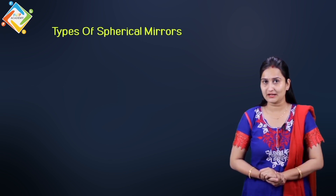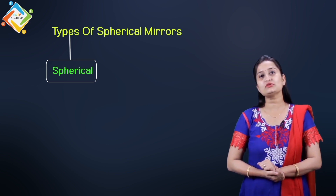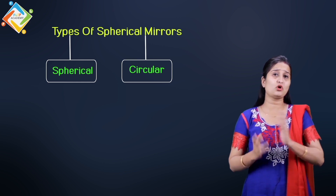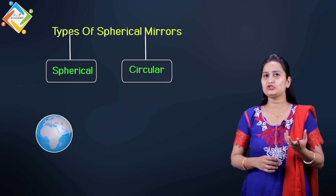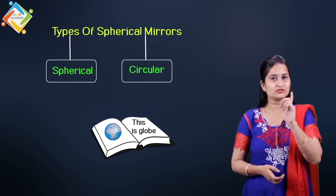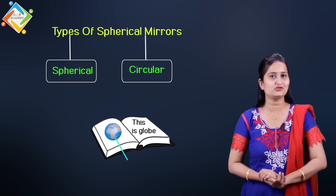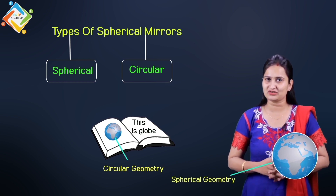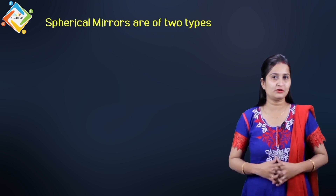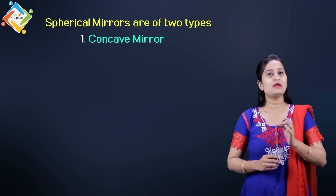We are going to deal with some types of spherical mirrors. There are two types of geometry: spherical and circular. Both are round structures, but what is the basic difference? If we take a globe and draw it on paper, we make a circle — that is circular geometry. But the actual globe in hand has depth — that is spherical geometry. We are not talking about circular geometry here; we are talking about spherical geometry. Spherical mirrors are of two types: concave mirror and convex mirror.